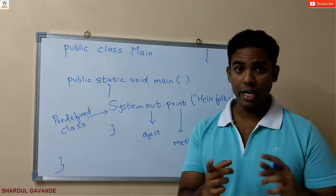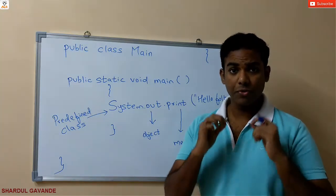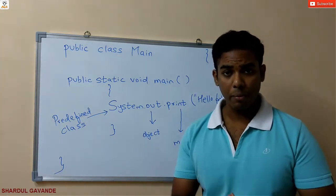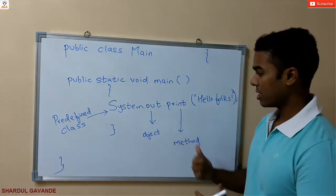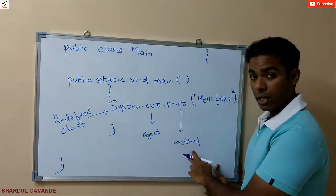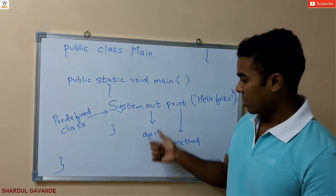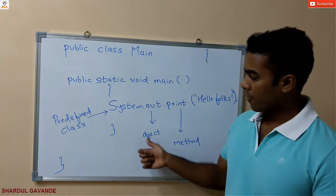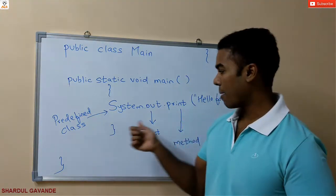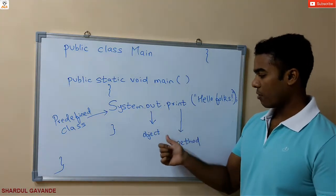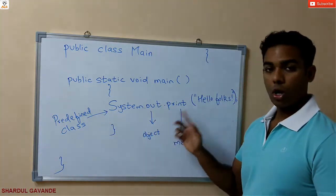We have a video on object creation and accessing a method using objects — if you have not watched that video, I would recommend you watch it first so that it is easier for you to understand this. So we have print as the method — in order to access a method, what you need is an object. So out is my object and System is my predefined class. I am accessing this method with the help of the object, giving us System.out.print.